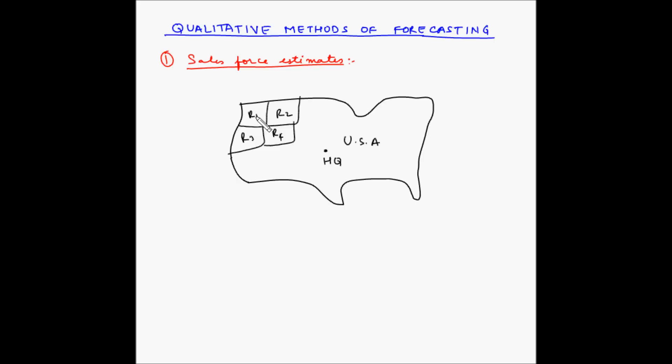So, the sales force of a company is in direct contact with the customers in that particular region. And hence, they have a good understanding of the future demands of their customers. Hence, the sales force can be asked to give their estimates about the likely sales of the products in their region. Now, generally, they are asked to submit three estimates of the expected demand. First is the optimistic, which is the highest expected demand. Second is the most likely.